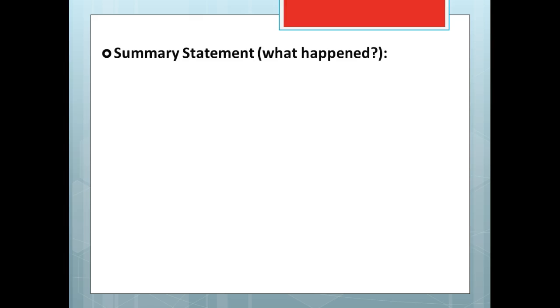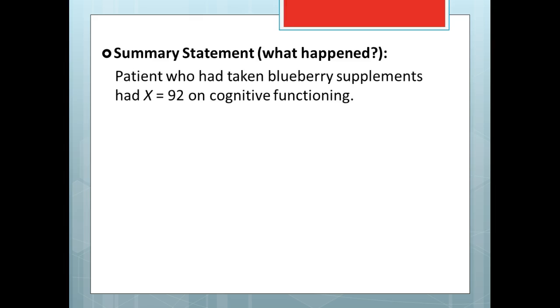Now let's discuss how to report the results of this two-tailed hypothesis test. First, the summary statement explains what happened in the study. The first sentence will briefly describe the study and report the sample score or the sample mean. Thus, for this lecture example, the first sentence would be: Patient who had taken blueberry supplements had X equals 92 on cognitive functioning.